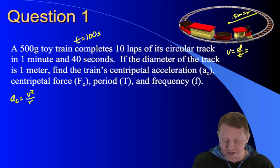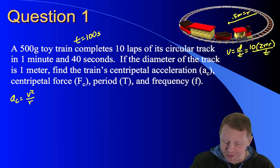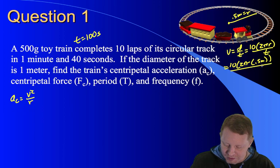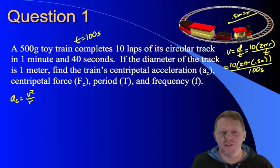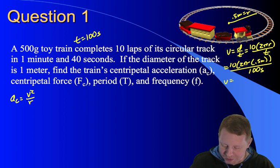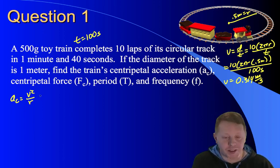In this case, our distance is 10 times around a circular track. So 10 times the circumference or 2πr divided by the time. So that's going to be 10 times 2π times half a meter radius divided by 100 seconds. And when I do all that, I come up with the speed of about 0.314 meters per second.